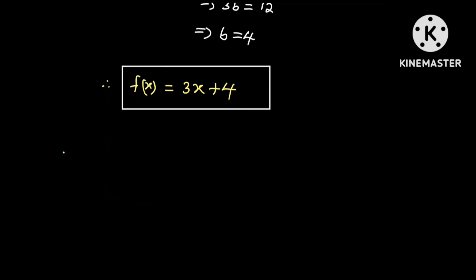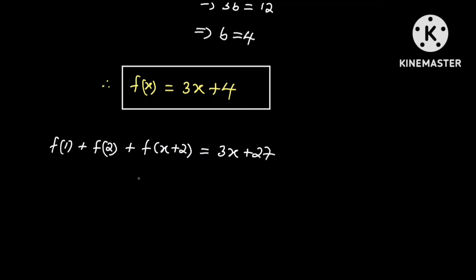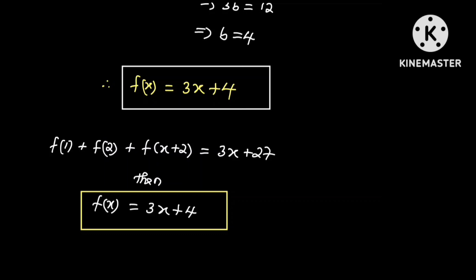So we are saying that if f of 1 plus f of 2 plus f of x plus 2 is equal to 3x plus 27, then f of x will be equal to 3x plus 4. Thanks for watching. Please do well to subscribe to this channel and share this video with your friends.